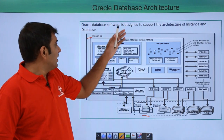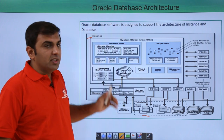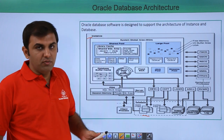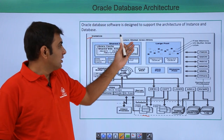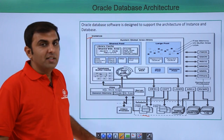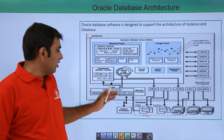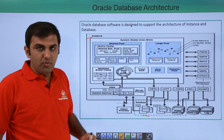When you are talking about the instance, the instance consists of two things: one is the System Global Area, called SGA, and another one is your background processes.